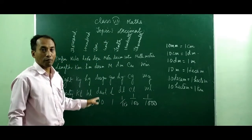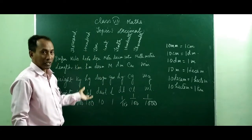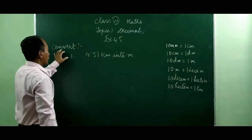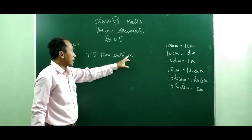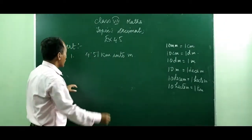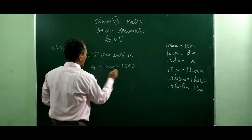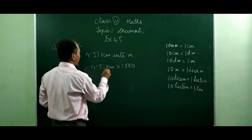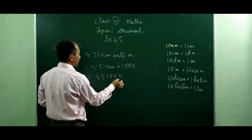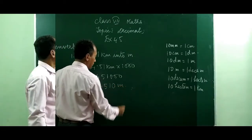Now, if you know this chart, it will be very easy to convert meter into kilometer, meter into hectometer, or meter into millimeter. We will do the exercise and you will find it easier. Exercise 4.5, question number 1: convert 4.51 kilometers into meters. Meter is the unit place and kilometer is the thousandth place. So we are going to convert thousandth into unit place. What we do is multiply 4.51 kilometers by 1000. Since kilometer is in the thousandth place, we multiply by 1000 — there are three zeros, so the decimal shifts three places. The answer is 4510 meters.